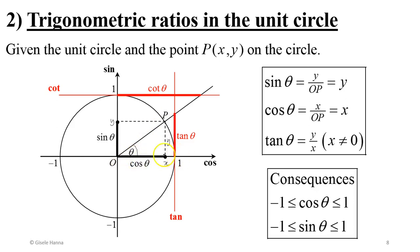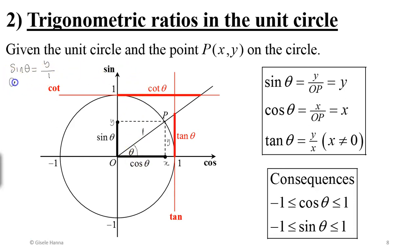Looking for sine of angle θ formed by radius OP and the horizontal axis: sine θ equals opposite over hypotenuse. The hypotenuse is the radius of the unit circle, which is 1, so Y equals sine θ. Similarly, cosine θ equals adjacent over hypotenuse, which is X over 1, so X equals cosine θ.